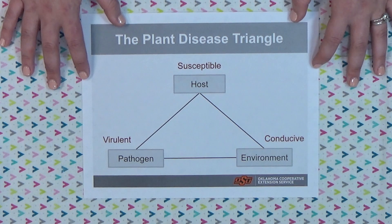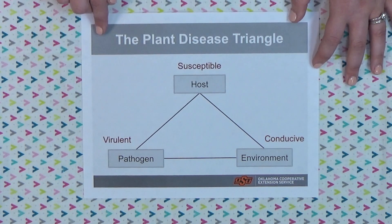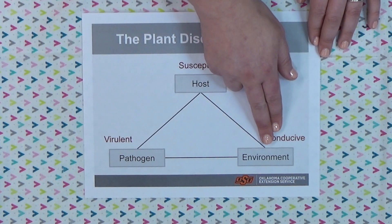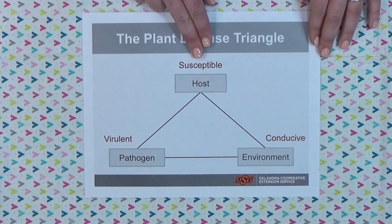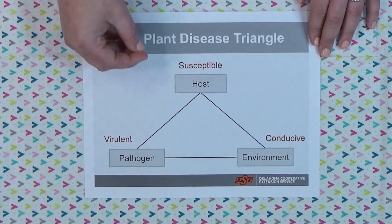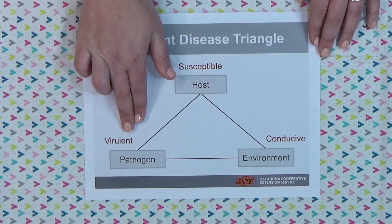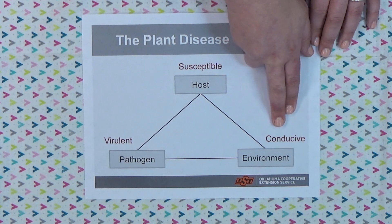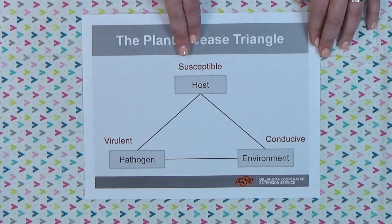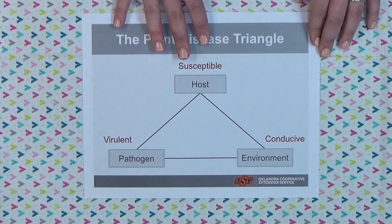When it comes to controlling plant diseases, we try to think of the plant disease triangle. What makes up the plant disease triangle is a host, a pathogen, and the environment. The host has to be susceptible to that pathogen. The pathogen has to be virulent, meaning it is capable of getting within that plant and causing damage. And then the environment also has to be conducive — certain diseases really like it wet and humid, some really like it hot and dry. If you have all three of these characteristics, that is when you begin to see the presence of disease.